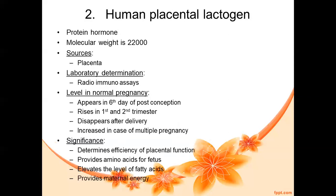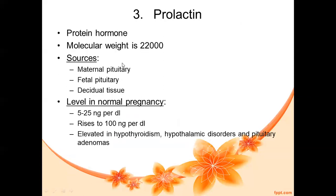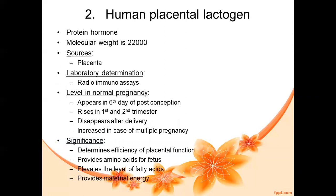The next hormone is human placental lactogen (HPL). HPL is a protein hormone with a molecular weight of 22,000. The source of HPL is also placental — from the word itself, it is human placental lactogen. The presence of HPL can be determined by radioimmunoassay.